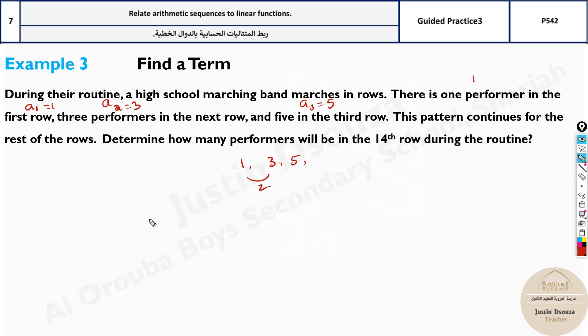And then, what do you have to find? At the 14th row, n is 14. So we have to find an equals a1 plus n minus 1 d. This is the formula.